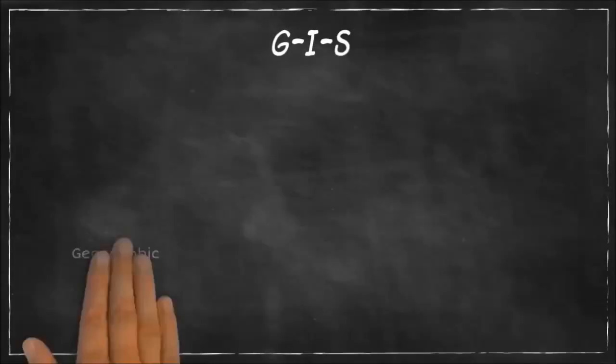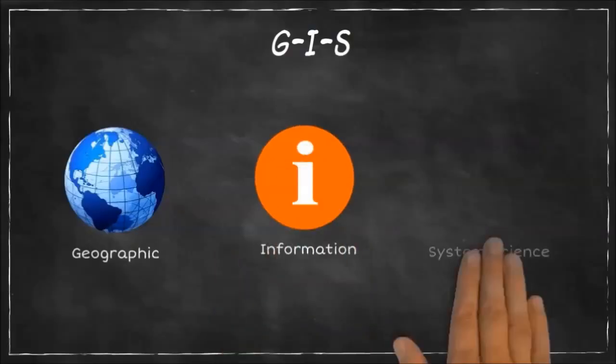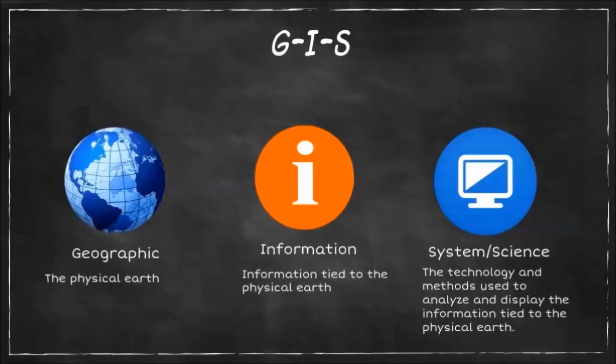GIS stands for Geographic, Information, System or Science, which means the physical world or space, information that has a location or place in space, and the technology and methods we use to analyze and map the places in space.